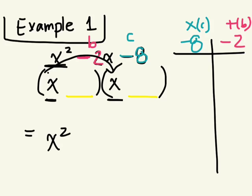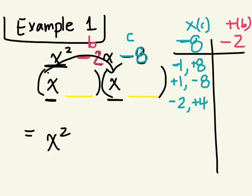Let's start by listing factors of negative 8. What times what is 8? We can do negative 1 times positive 8, or positive 1 times negative 8. What about 2? We have negative 2 and positive 4, which gives us negative 8. And positive 2 times negative 4 also gives us negative 8. Are there any more factors of negative 8? 3? Does 3 go into 8? 5? 6? 7?